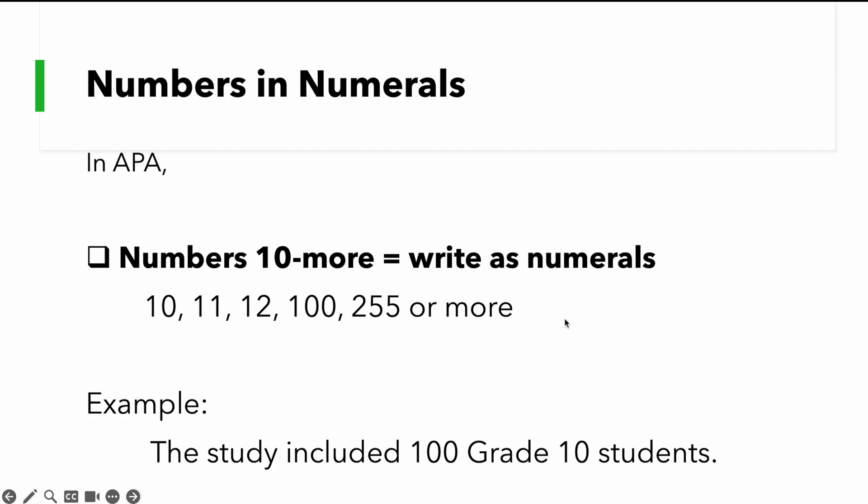So, we don't see words here. Example, the study included 100 grade 10 students. So, 100 here should not be written in words, rather as numerals. That's the rule. 10 or more. If you are going to think of a clue, just think of two or more numbers. So, 10 is two digits. One and zero. Two-digit numbers have to be written as numerals.